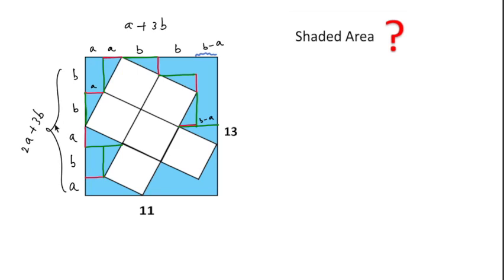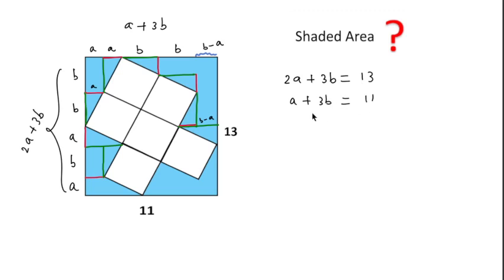So we can write 2a plus 3b equals 13, and a plus 3b equals 11. If we solve these two equations — subtracting the second from the first — we get a equals 2, and substituting back we get b equals 3.